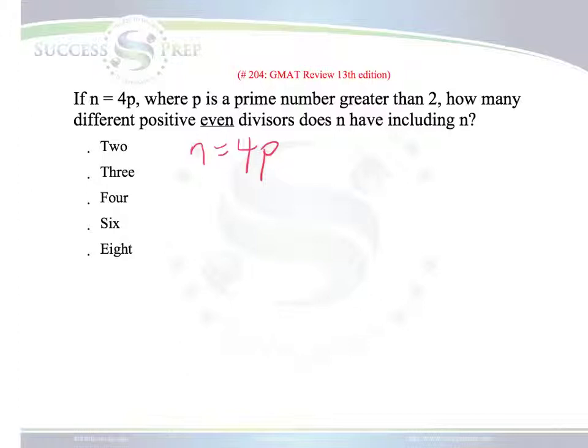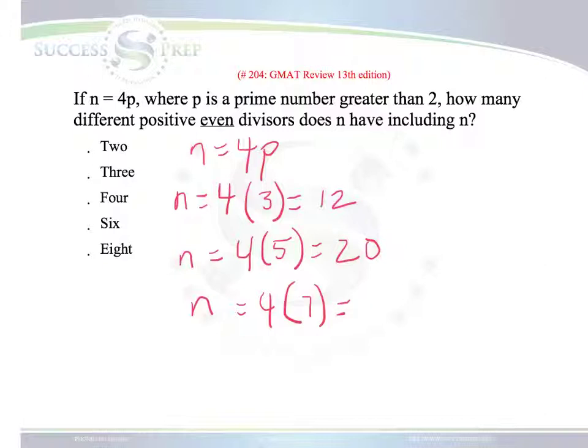So pretty much what we want to do here is let's test a couple of these and try to find out how many even divisors we have. Again, remember that a divisor are the numbers that make up a bigger number. For example, we can say n is equal to 4 times 3, which gives us 12. We can also have n equal to 4 times 5, which gives us 20. And then we could say n equal to 4 times 7, which is 28. Now, the reason why we're doing all these options is to try to see if there's a pattern of the number of positive even divisors.